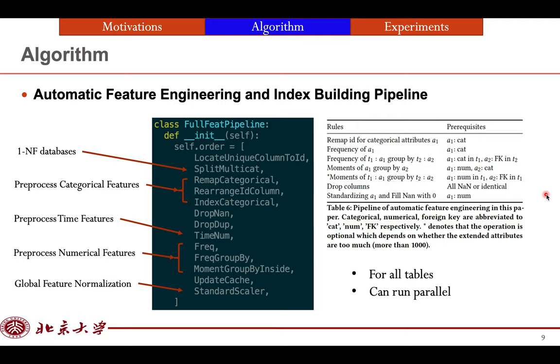Second, we do some automatic feature engineering and index building pipeline. The full pipeline we use is like this. We split multiple categorical features for satisfying the first normal form of database, which means that table's attributes are atomic. Then we preprocess categorical features by remapping ID, preprocess time features, numerical features, and do some global feature normalization. All preprocessing must be done for all tables, and we implement it on Alibaba's big table platform.